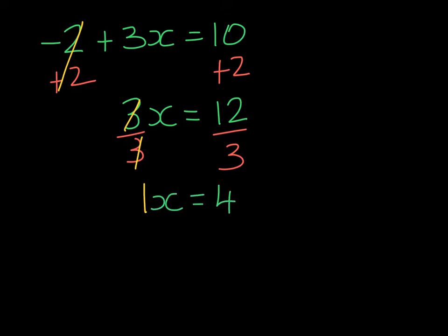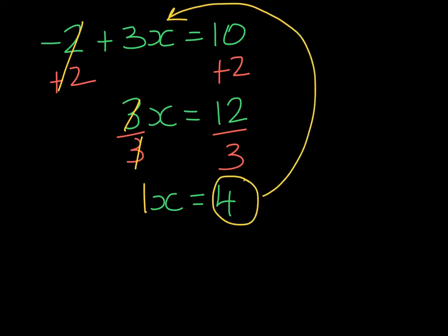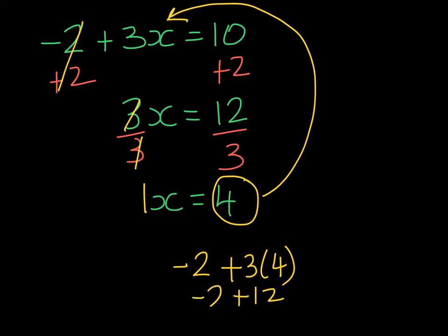At this point we can take the solution and substitute it into the original equation to check: negative 2 and then 3 times 4. Well, that gives us 12. If I owe 2 but I have 12, I get 10. So we've solved it correctly.